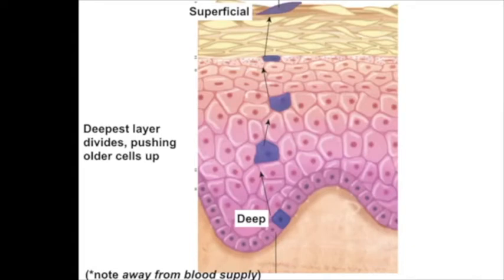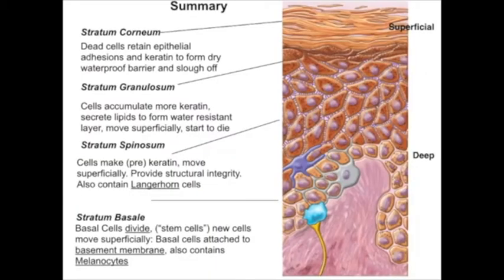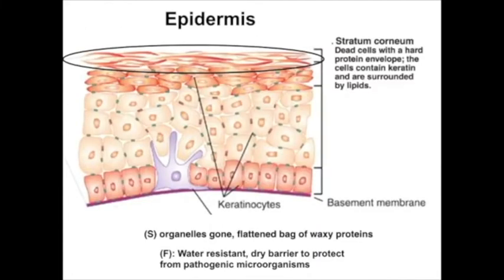Being dead is basically their job, as we'll see. Those dead cells are what you see when you look at another person, and are just as important, if not more important, than the other layers. I'm going to spend the most time on the most superficial and the deepest layers; with the middle layers I'll just mention a few bullet points. We're going to start at the most superficial level — the layer that presents itself to the outside world — and this is the stratum corneum.